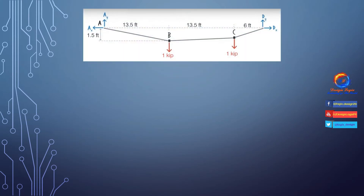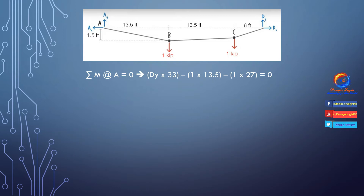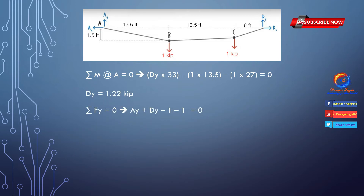Let's first draw the free body diagram. Joints A and D each have two unknown forces in the X and Y directions. One kip loads from traffic lights at joints B and C act downward. Using summation of moments at joint A equals zero: Dy × 33 − 1 × 13.5 − 1 × 27 = 0, where Dy makes a counterclockwise moment and both one kip loads make clockwise moments. Solving gives Dy = 1.22 kips.